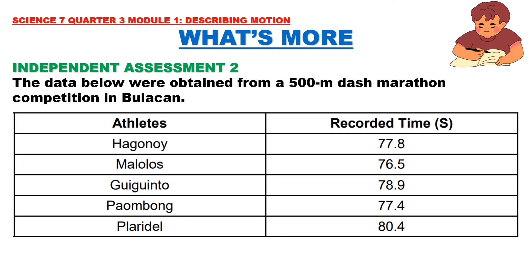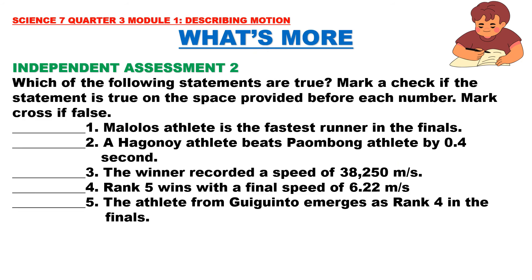Independent Assessment 2: The data below were obtained from a 500-meter dash marathon competition in Bulacan. Athletes are from Hagonoy, Malolos, Giginto, Paumbong, and Plaridel, with recorded times of 77.8, 76.5, 78.9, 77.4, and 80.4 seconds respectively. Which of the following statements are true? Mark a check if true and a cross if false.